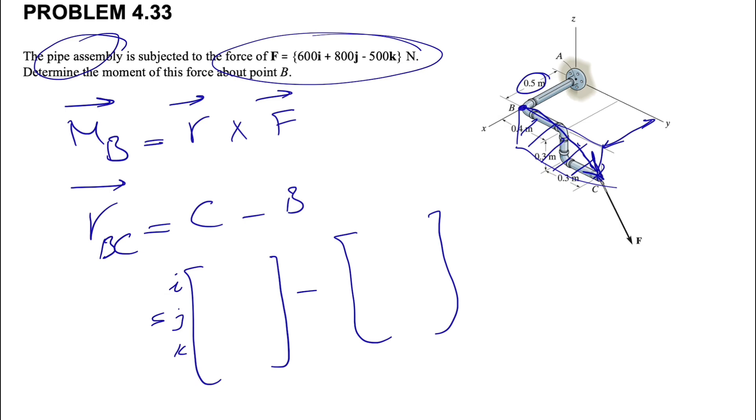So for C, we have 0.5 for X component. And as we can see, B has the same X component too as they are in the same plane.